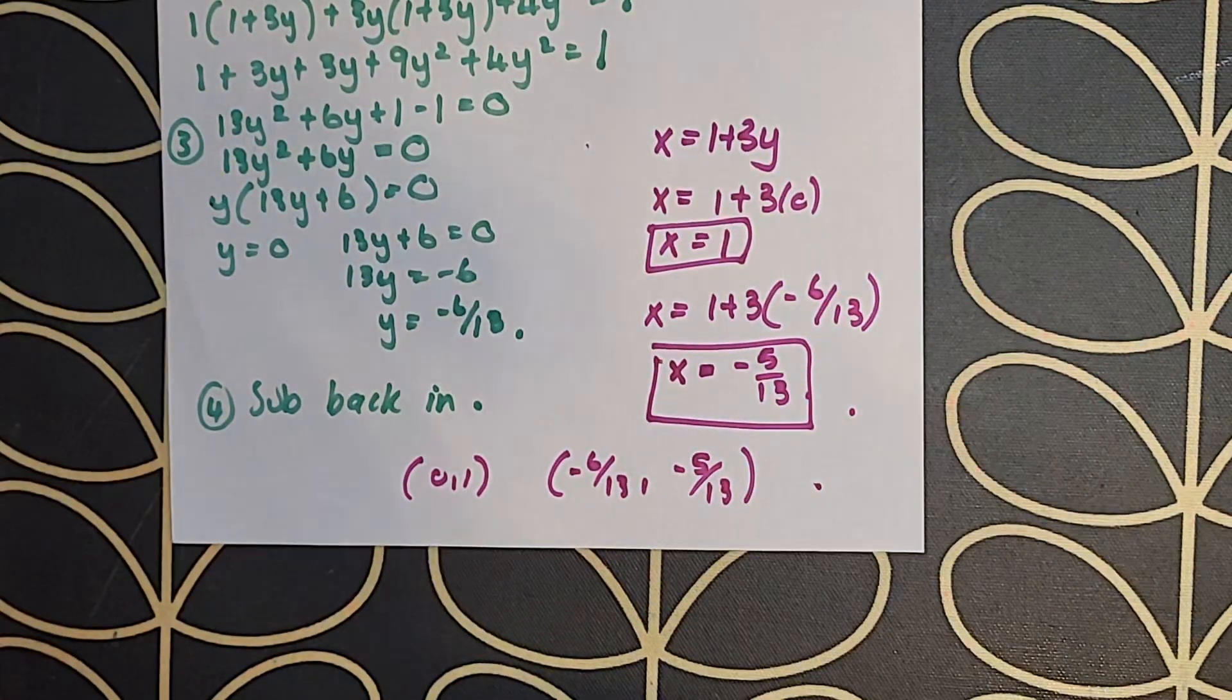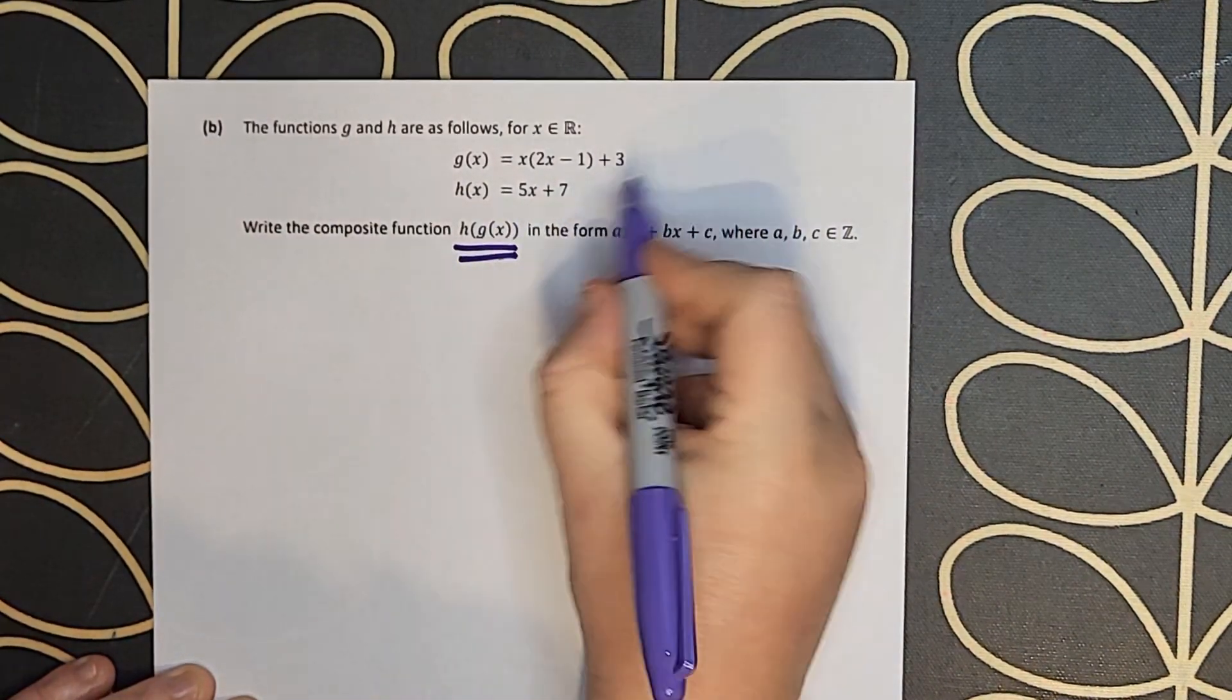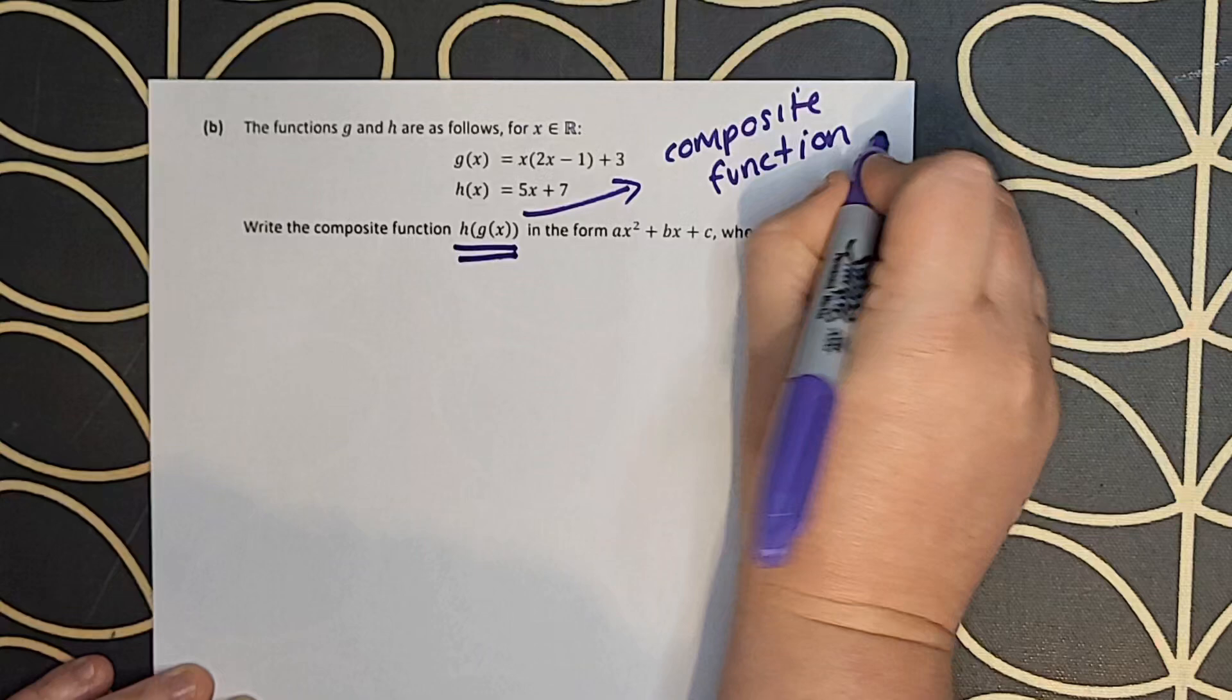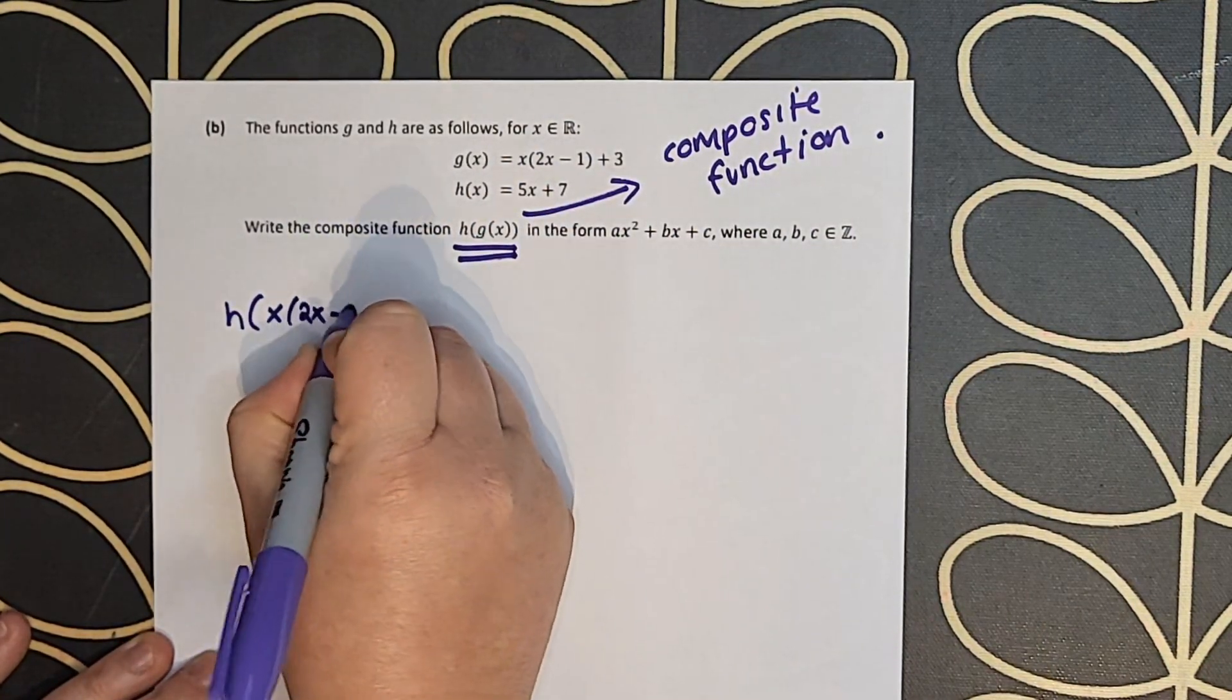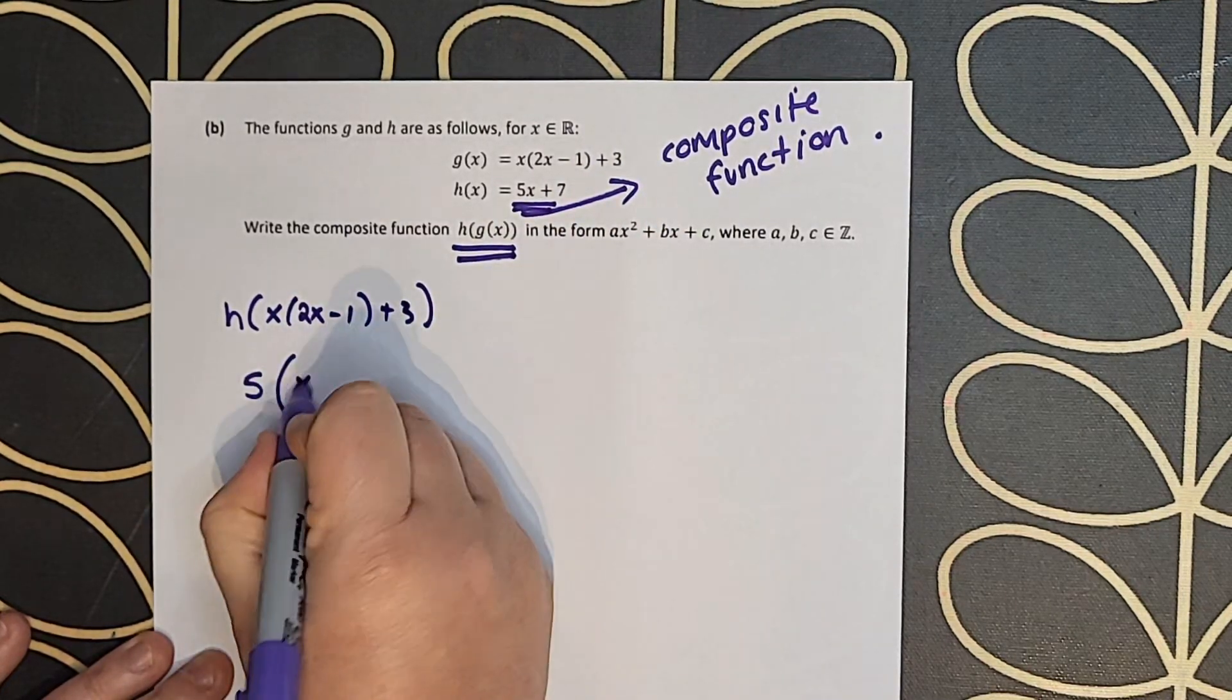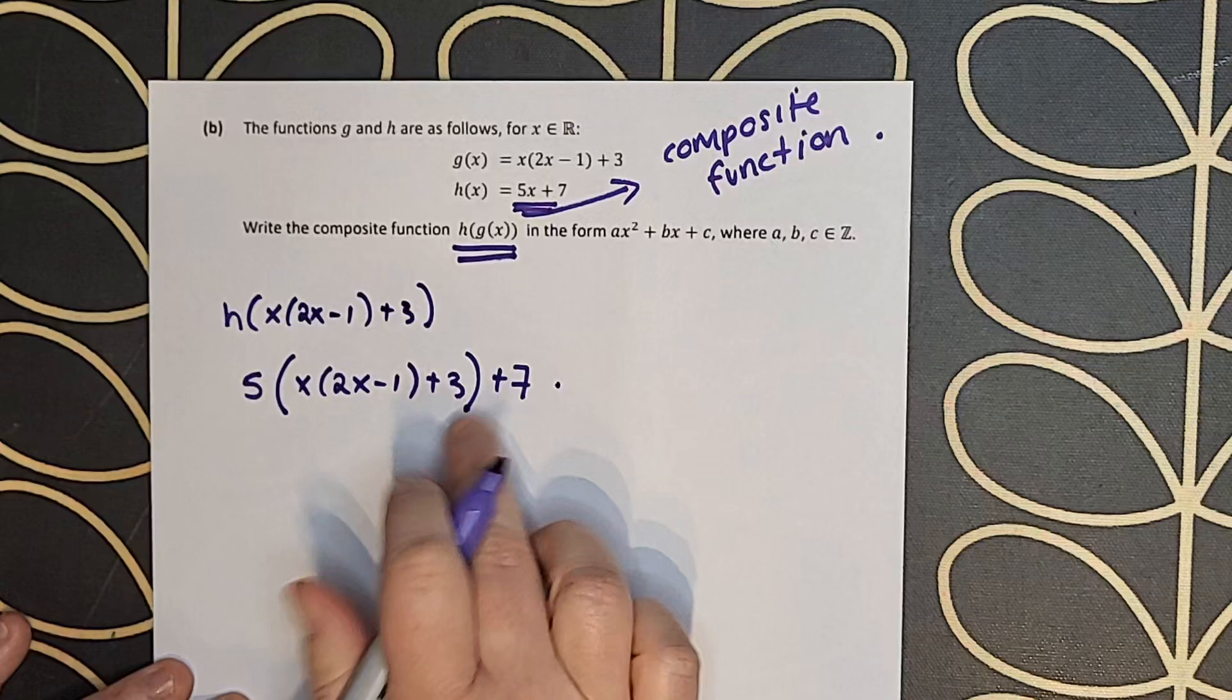Now let's move on to part b. In part b we are working on composite functions, so we have g of x and h of x. Now g of x is not fully simplified—you can do that now or while you're working it out, it doesn't really matter. They want h(g(x)), which means I'm subbing in g of x for the x in the h function. So I'm writing that out here.